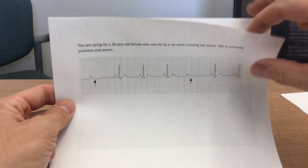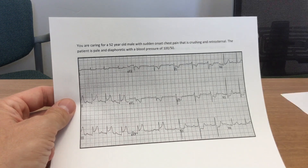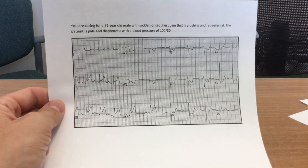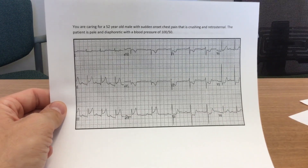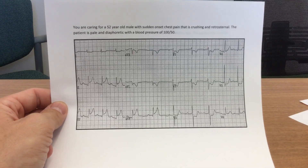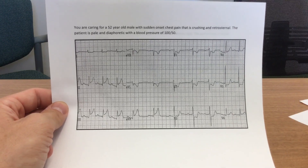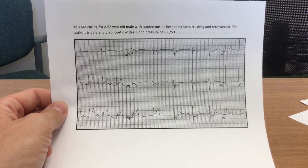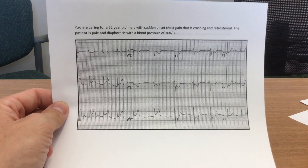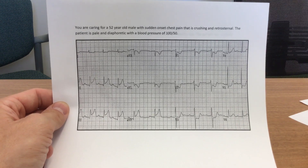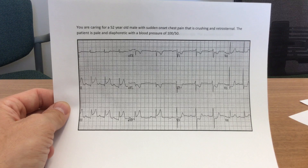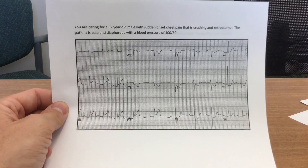Next one: you're caring for a 52-year-old male with sudden onset chest pain that is crushing and retrosternal. The patient is pale and diaphoretic with a blood pressure of 100 over 50. This is a 12-lead — there's a little more going on here.